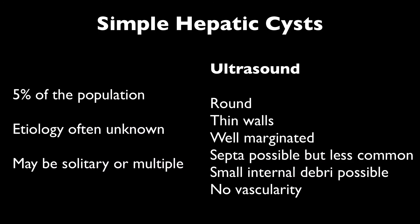Things to remember about simple hepatic cysts are that about 5% of the population will have them. Usually less than 10% will ever complain about them, so they're usually incidental findings. The etiology is often unknown. They are usually solitary, but there could be multiple. On ultrasound, you'll find that they're round, they always have very thin walls, and they are well-marginated, meaning that they're usually well-circumscribed.